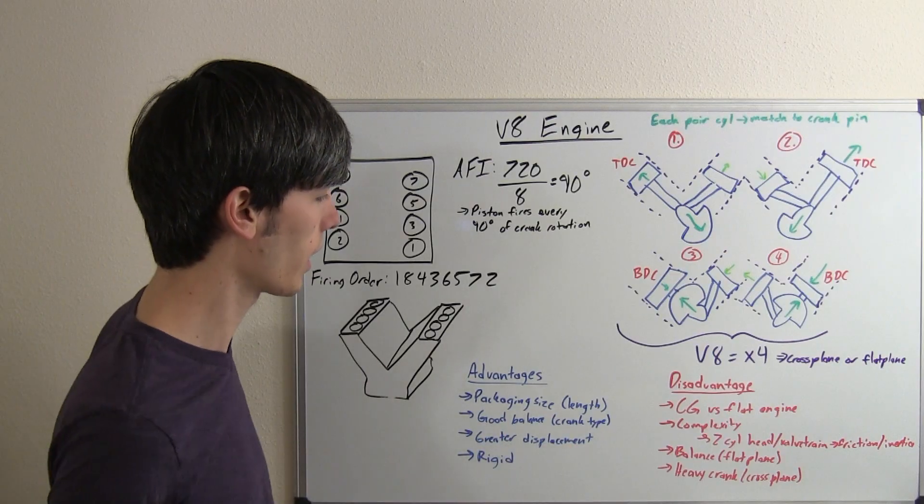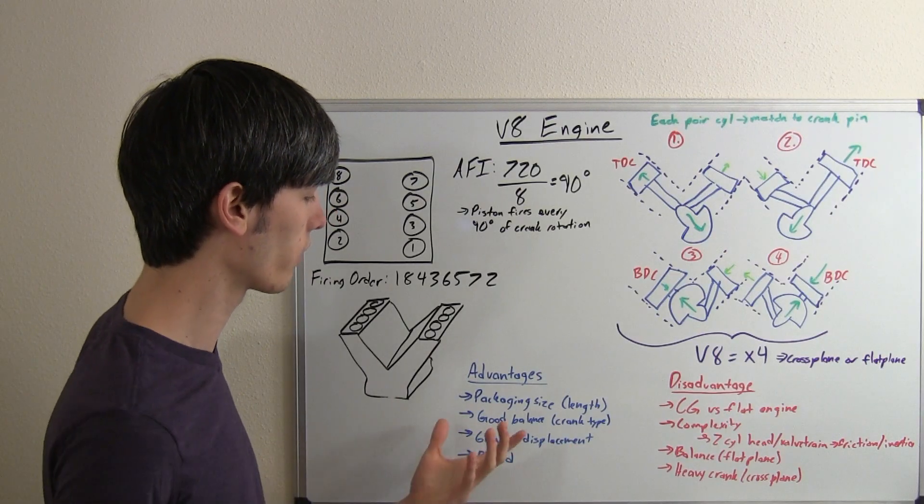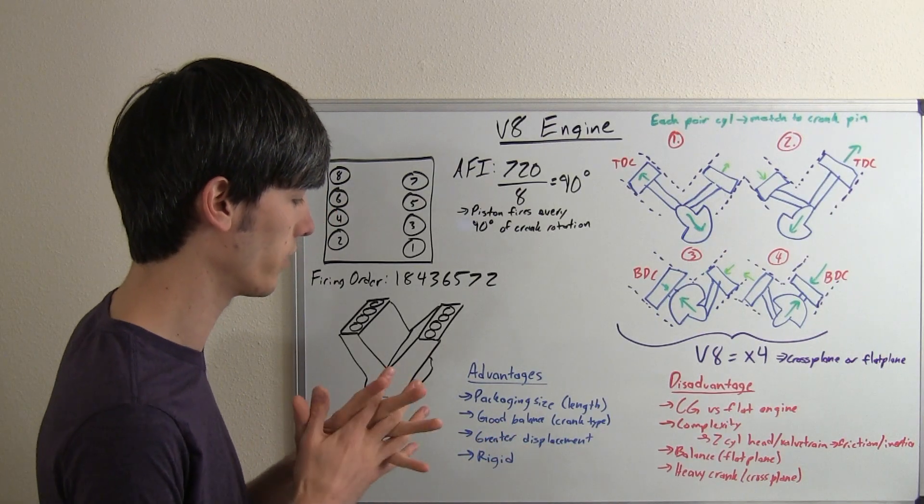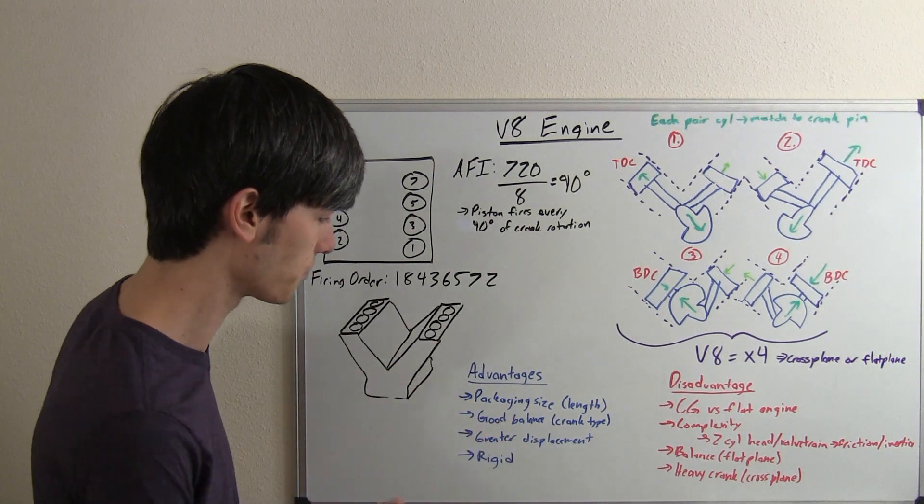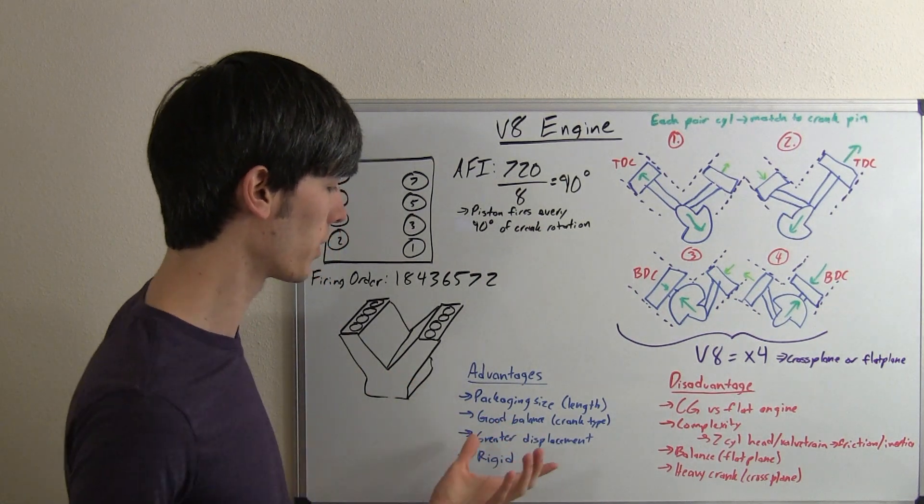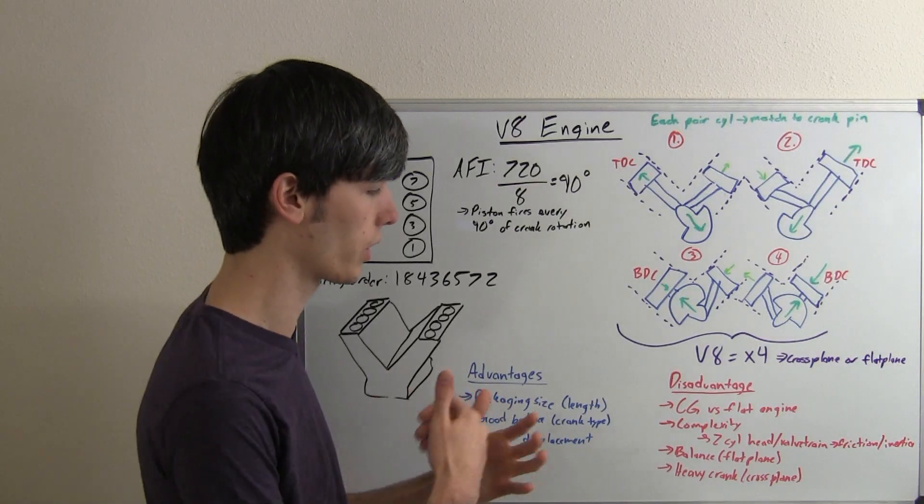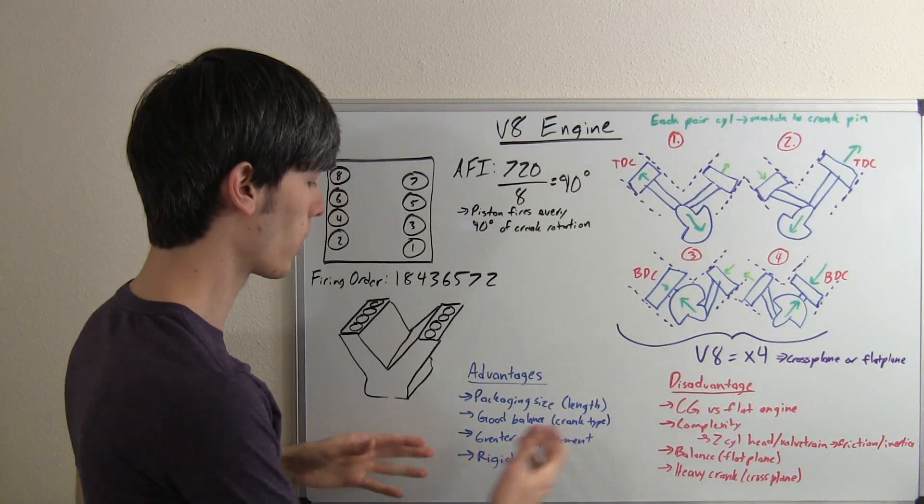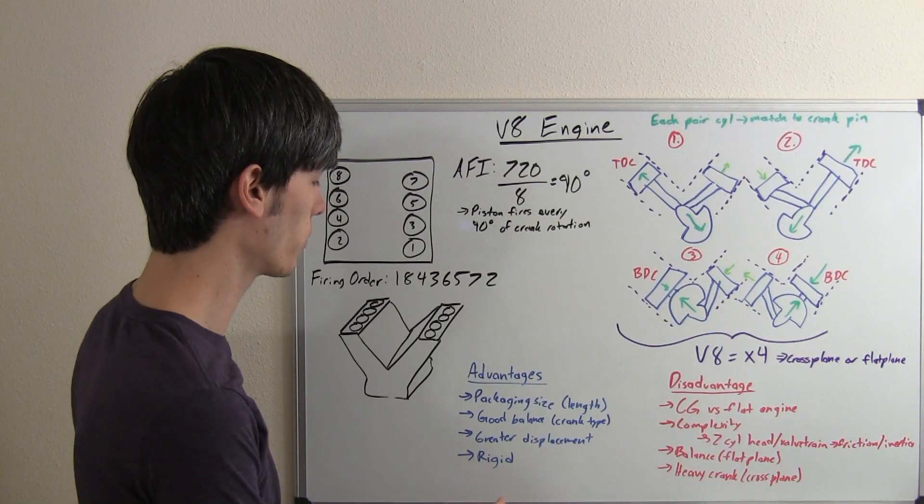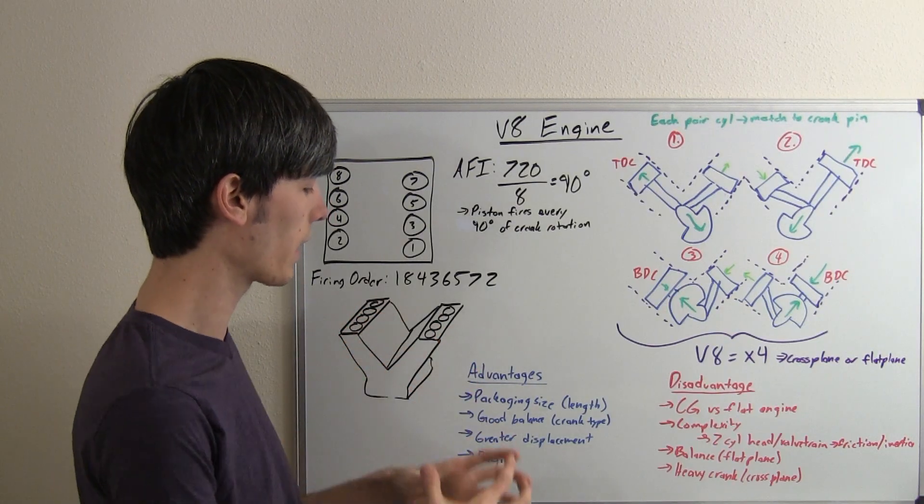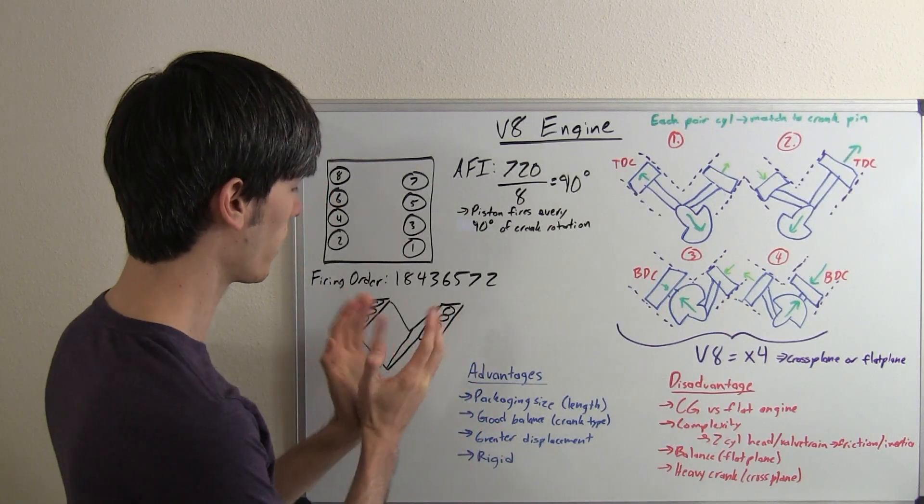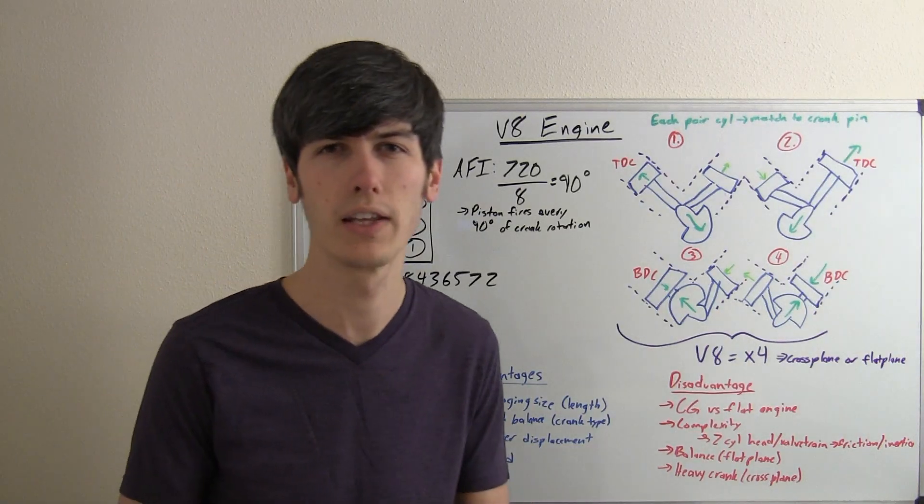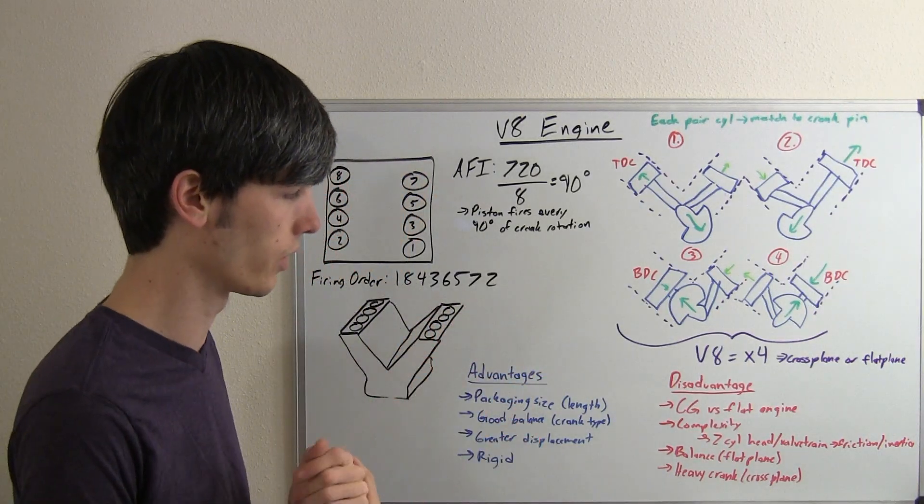Also, depending on the crank type, if it is a cross plane, you can have a good crank balance, a good balance of the engine. Greater displacement, of course, if you've got eight cylinders versus a traditional four cylinder, they're kind of limited by the engine balance, so you can have larger engines. And also, this engine is very compact, and in creating that, it's also very rigid. So, that's another big benefit of a V8 versus an inline engine.